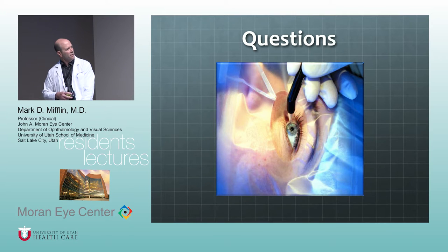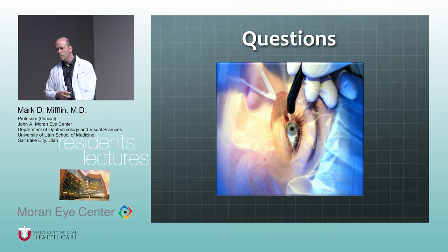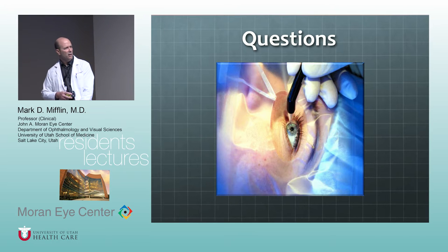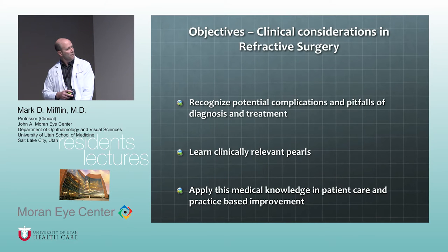Most of you have seen pachymetry in glaucoma clinic. Ultrasonic pachymetry is still the gold standard, although OCT-based pachymetry — such as Pentacam — is very accurate too. The accuracy of optical pachymetry is approximately plus or minus five microns.